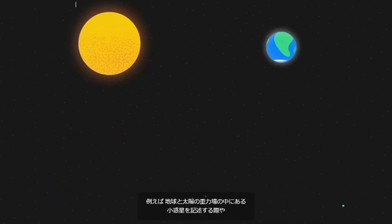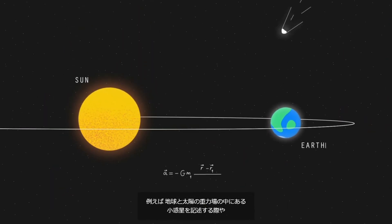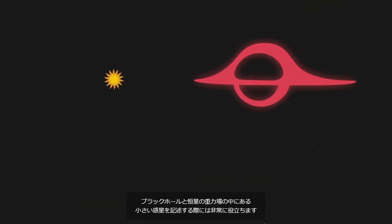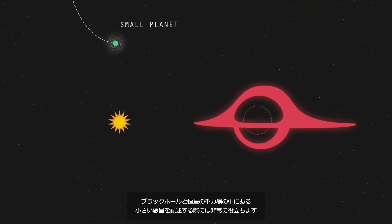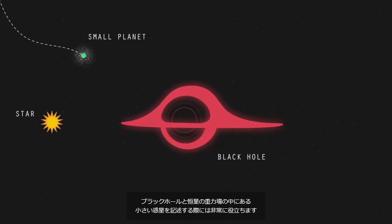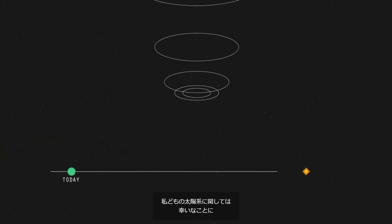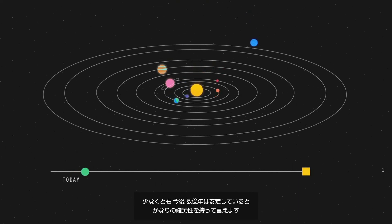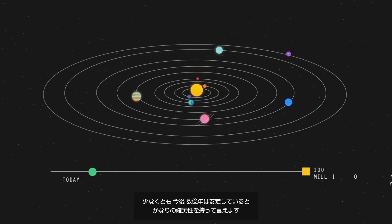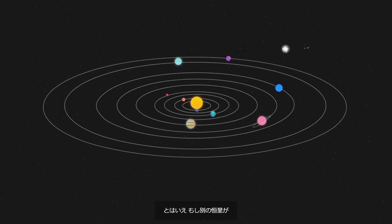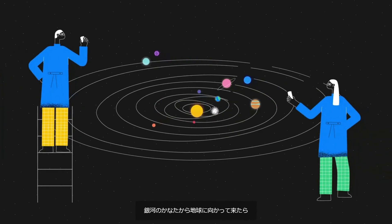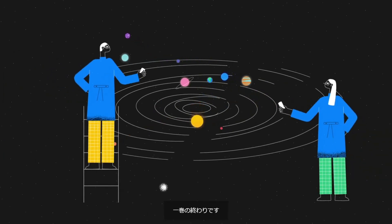It proves extremely useful in describing, for example, an asteroid in the Earth-Sun gravitational field, or a small planet in the field of a black hole and a star. As for our solar system, you'll be happy to hear that we can have reasonable confidence in its stability for at least the next several hundred million years. Though, if another star, launched from across the galaxy, is on its way to us, all bets are off.